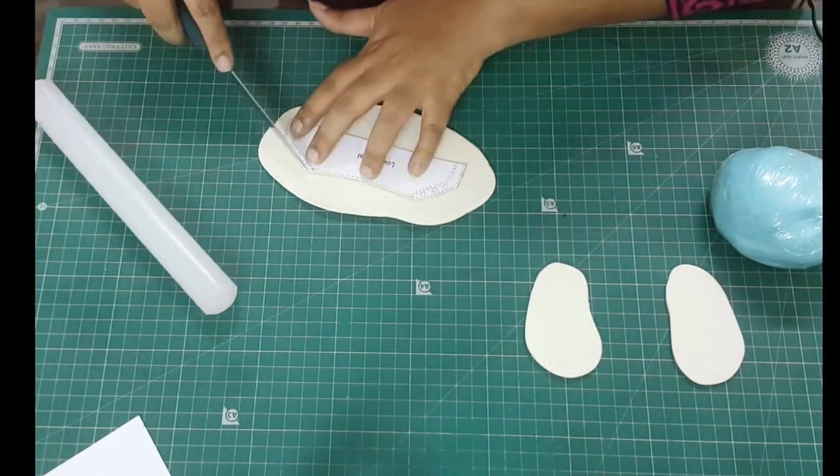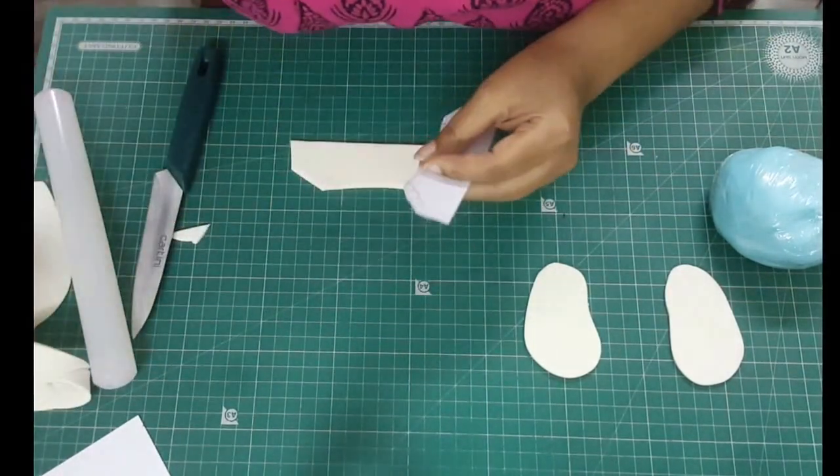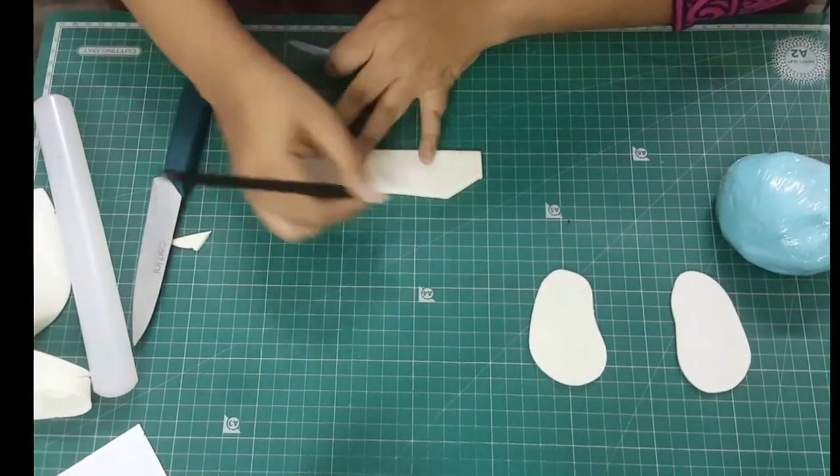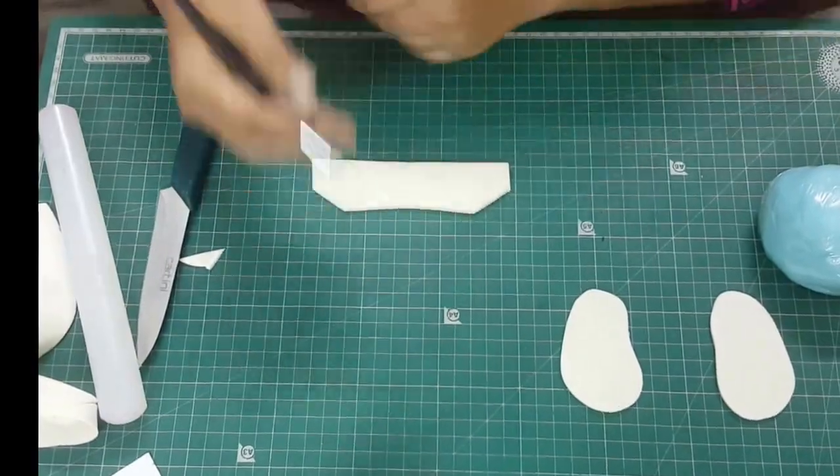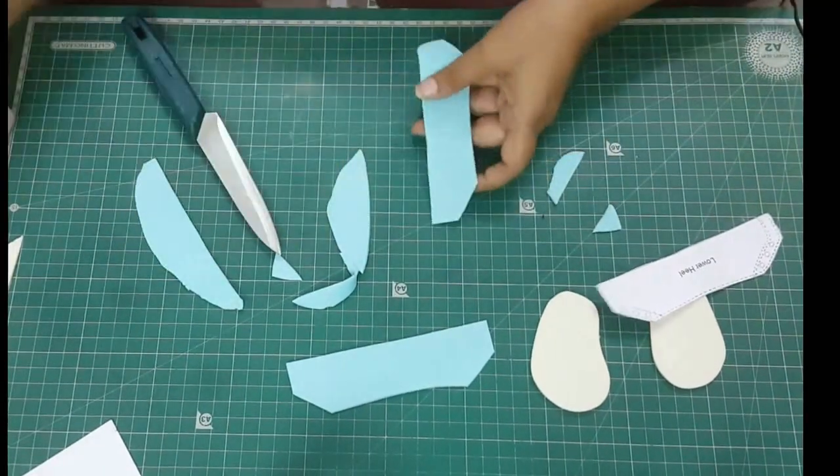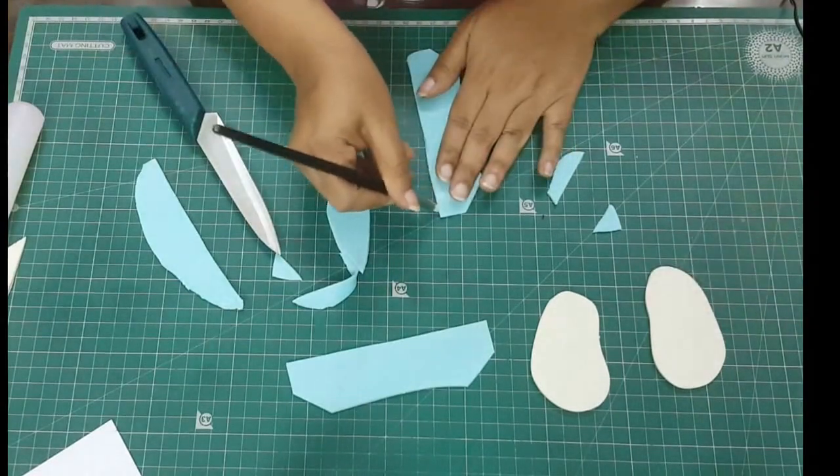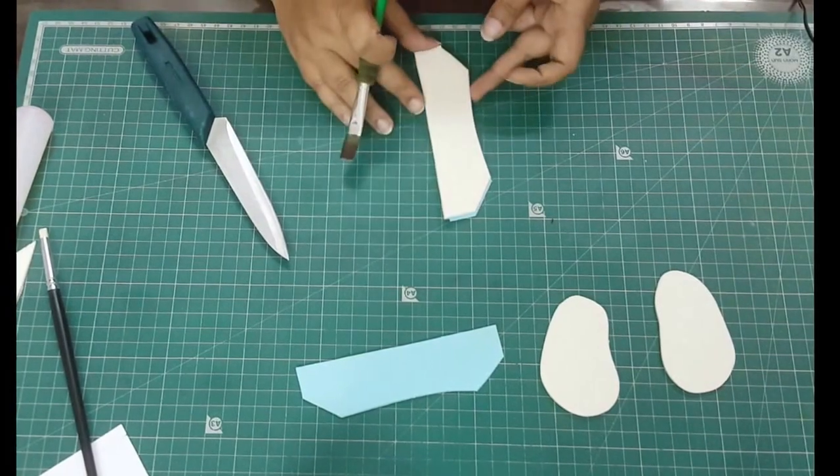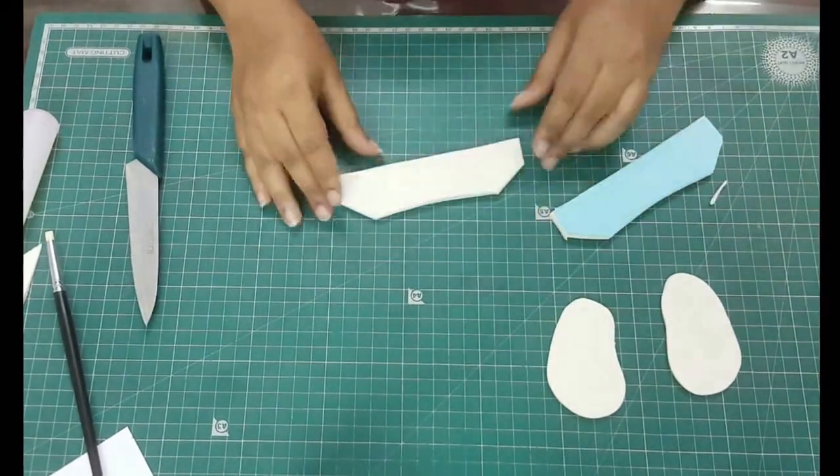Next, cut out the back. You need four pieces of these: two in white and two in blue. Make sure the edges are clean and not jagged. Stick the blue to the white as shown.